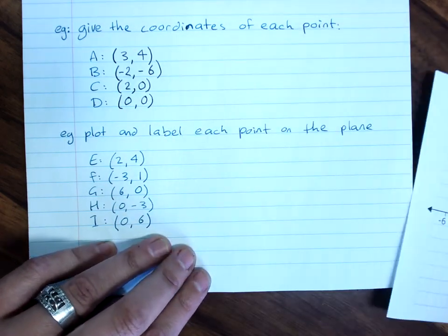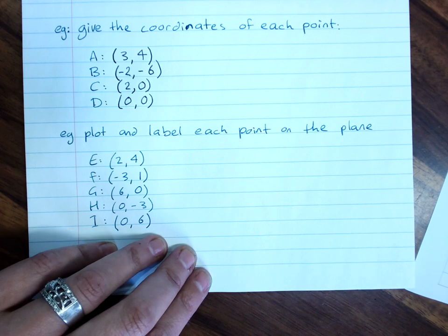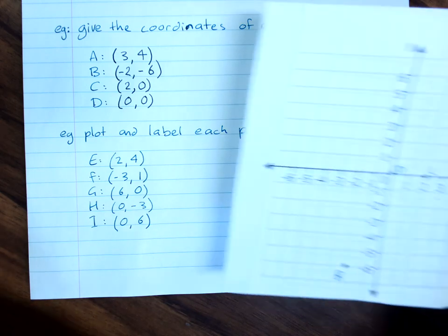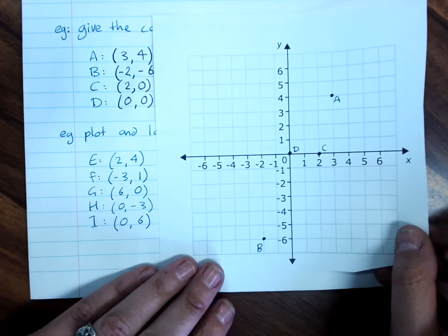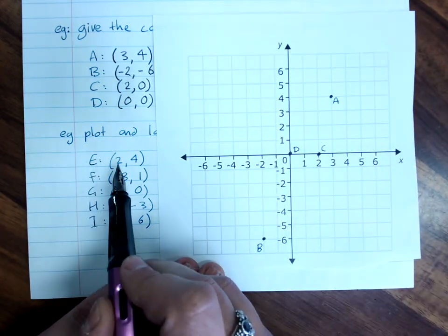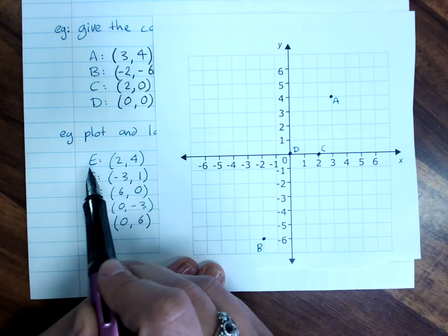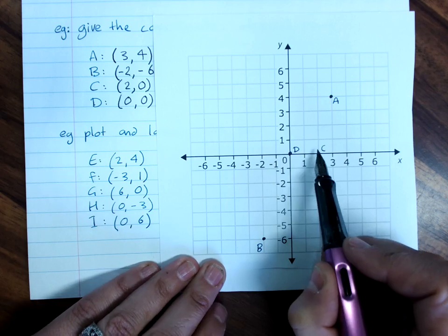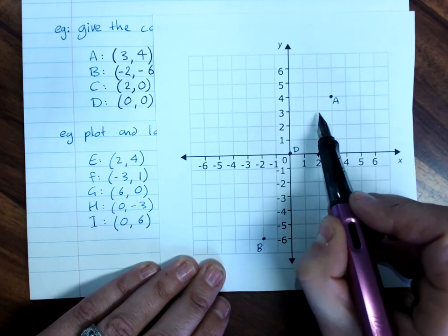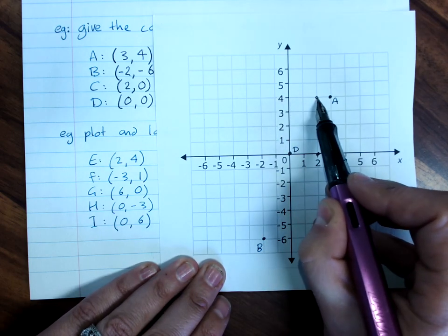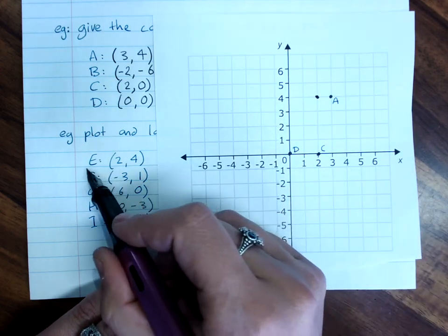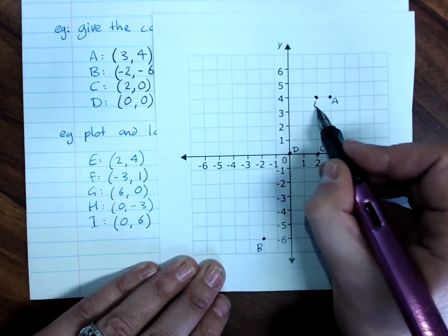The next question, plot and label each point on the number plane. Plotting just means draw the point where I'd like, where it needs to be. So E is two, four. I go to two on the x-axis, and four on the y-axis. And I put a point in line with both of them. And I label it point E.